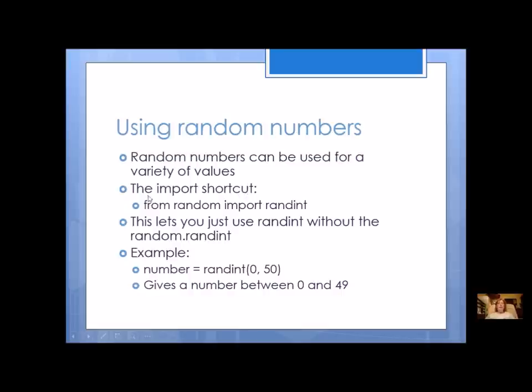Remember in our code we used an import shortcut which looked like this. This shortcut lets you use randint without having to use random.randint. So this is how we did it in CodeSculptor, random.randint. But if you import it this way you can just use randint. It's a little bit of a typing shortcut.